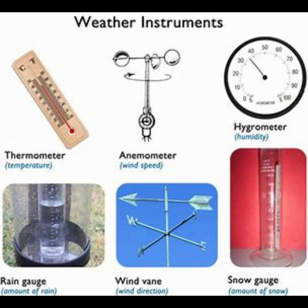Weather conditions are measured using a variety of instruments that monitor atmospheric parameters. A thermometer measures air temperature, typically using a liquid like mercury or alcohol that expands and contracts with temperature changes.